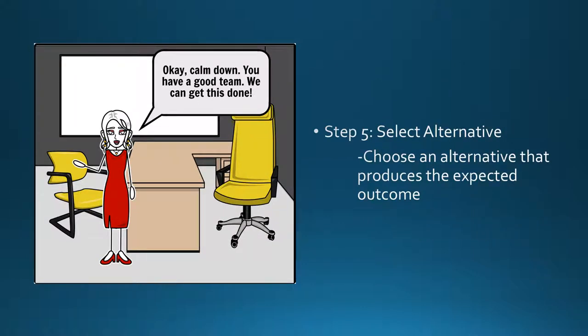Step 5: Select alternative. Choose an alternative that produces the expected outcome. Okay, calm down. You have a good team. We can get this done.